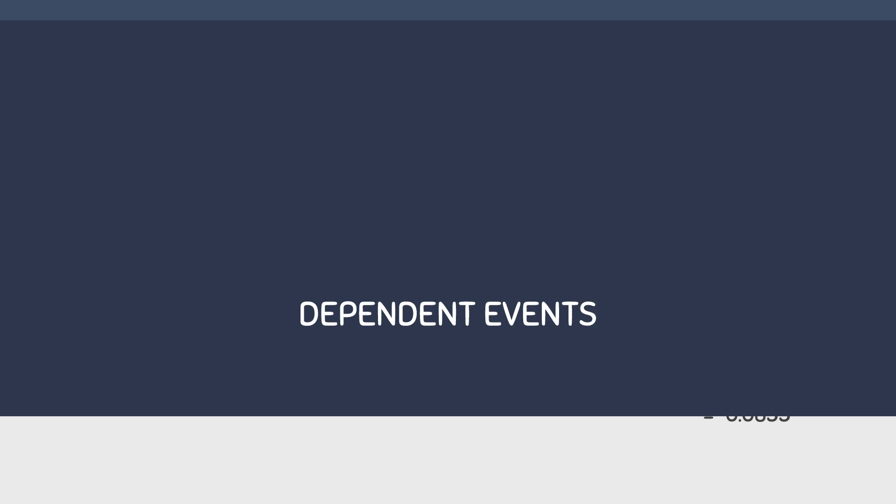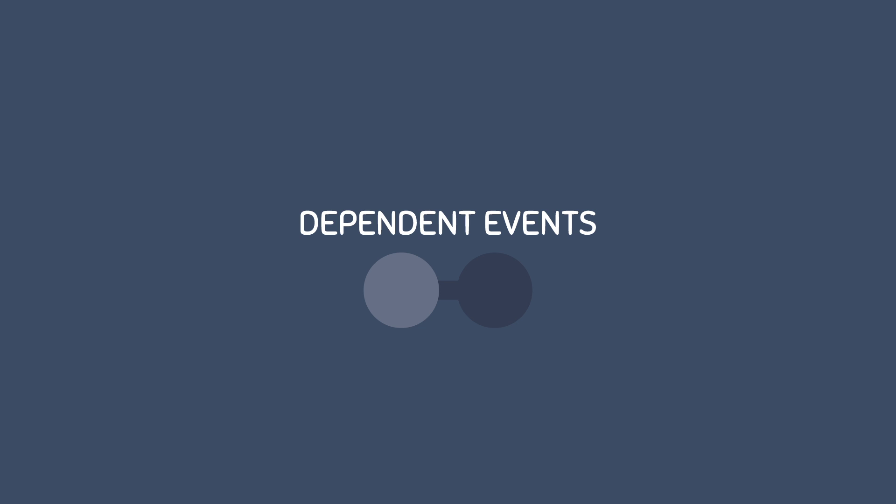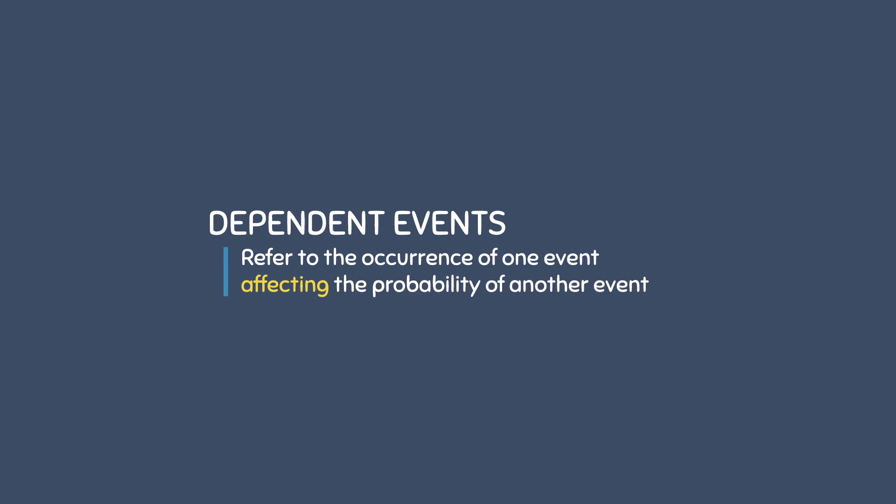What are dependent events? Dependent events are simply the opposite of independent events. Dependent events refer to the occurrence of one event affecting the probability of another event.